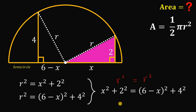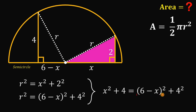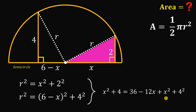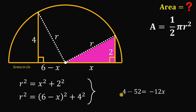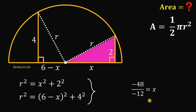Let's solve for the value of x. First, simplify: 2 squared gives us 4. Expanding (6 minus x) squared gives 36 minus 12x plus x squared, and 4 squared is 16. Subtracting x squared from both sides eliminates x squared. Combining similar terms: 36 plus 16 gives 52. Subtracting 52 from both sides: 4 minus 52 gives negative 48. Dividing both sides by negative 12: negative 48 over negative 12 gives us 4. So the value of x is 4.